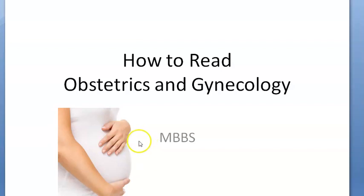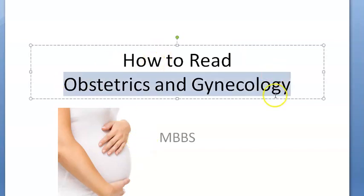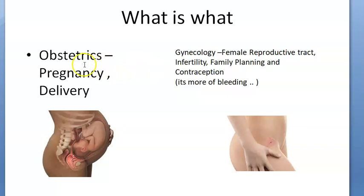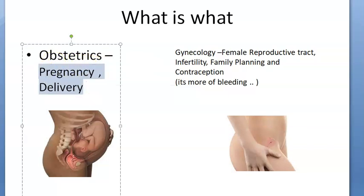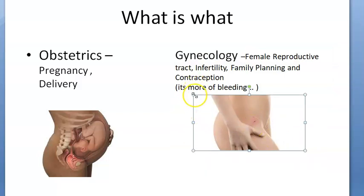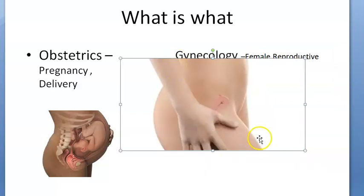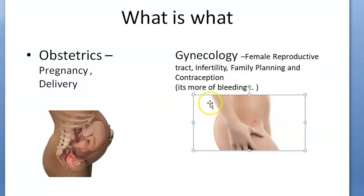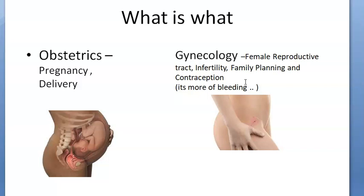In this video, let's look at how to read OBGyn - obstetrics and gynecology - in MBBS. Obstetrics has everything to do with pregnancy and delivery. Gynecology has everything to do with the female reproductive tract, dealing with infertility and family planning. Gynecology is mostly about bleeding - abnormal bleeding, postmenopausal bleeding - from menarche to menorrhagia to menopause.